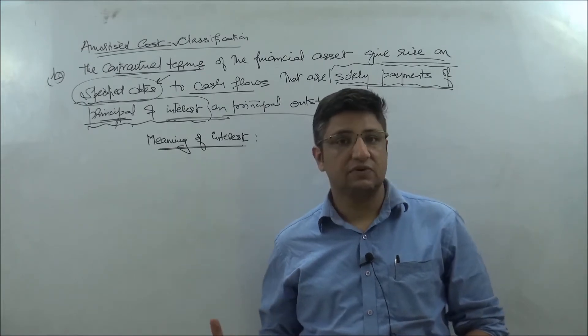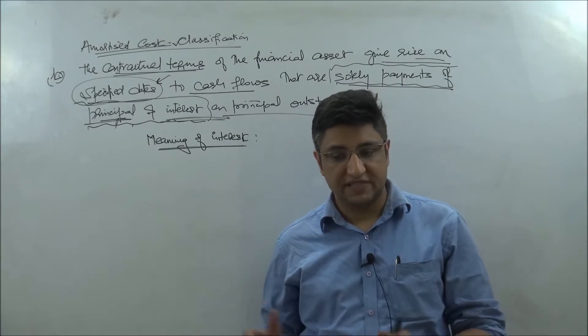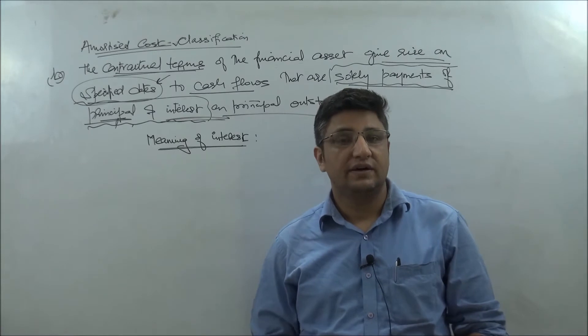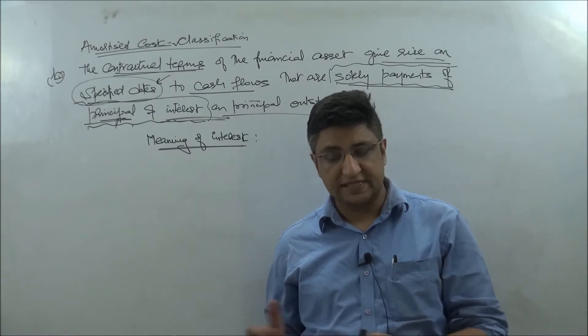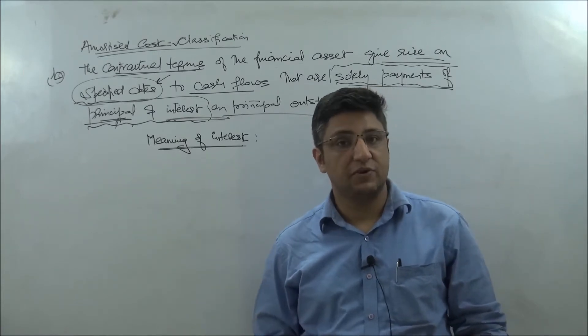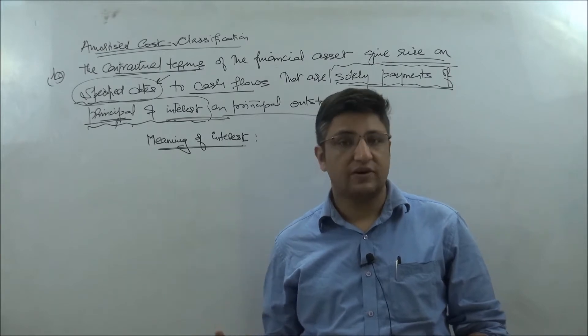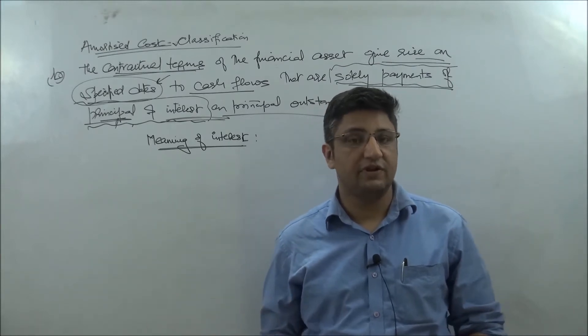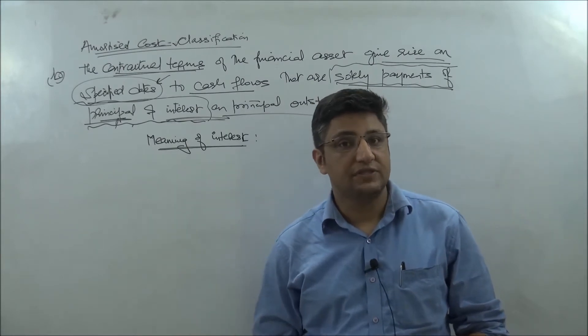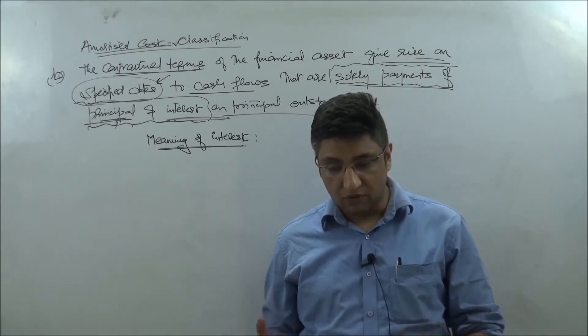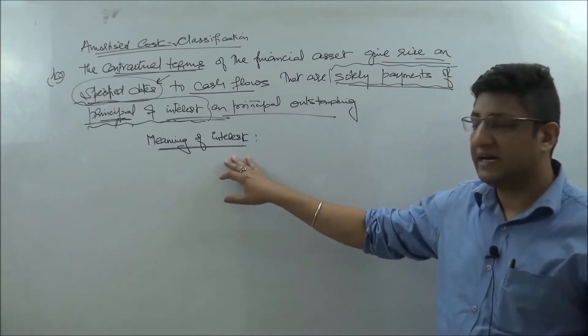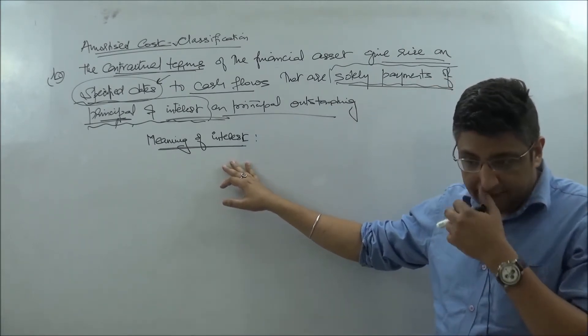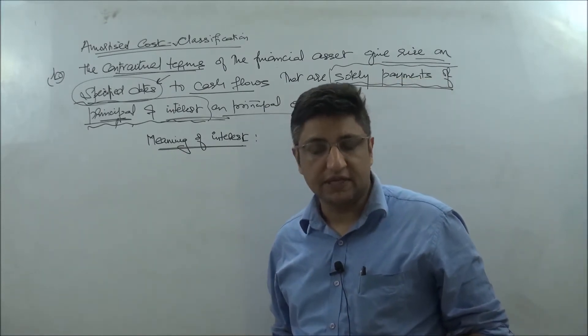We've discussed the conditions for the amortized cost model. The first condition is the business model test - we look at recovery of contractual cash flows. The second condition, which is our focus now, is that these contractual cash flows arise on specified dates which represent recovery of the principal amount and interest on the principal outstanding.